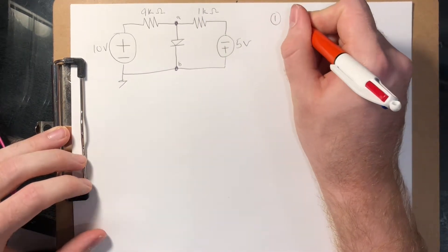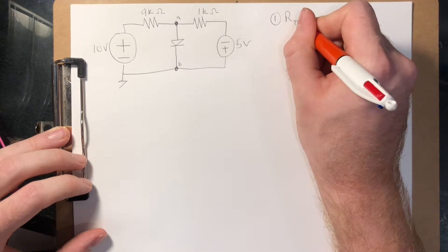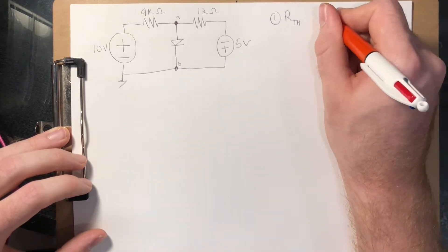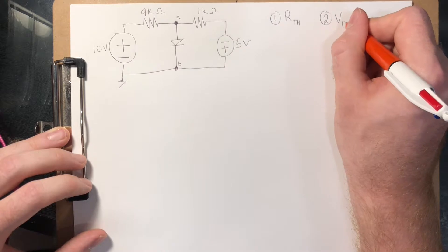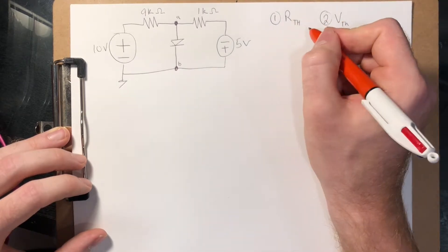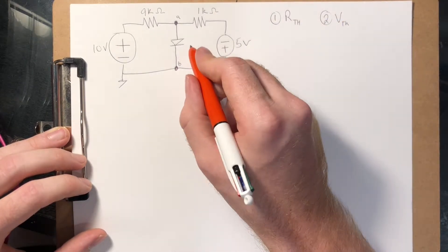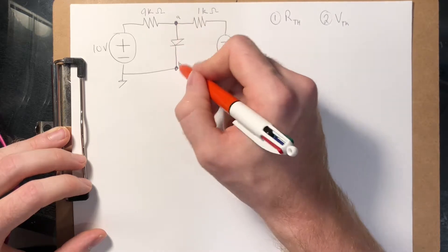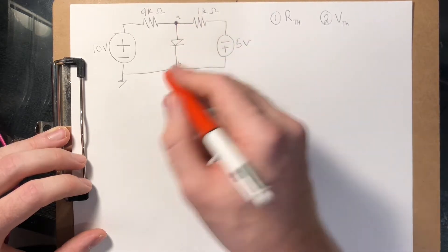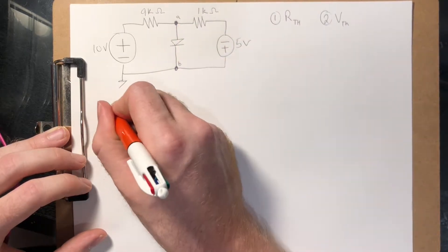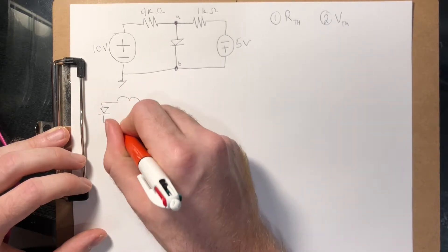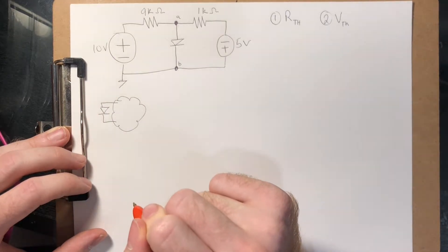The first one is we want to find R Thevenin. This is how I like to do it. And the second step is V Thevenin. So we want to find the Thevenin voltage and resistance across the diode here. So we can say that the diode is just looking at some circuit here that we don't know what it is.